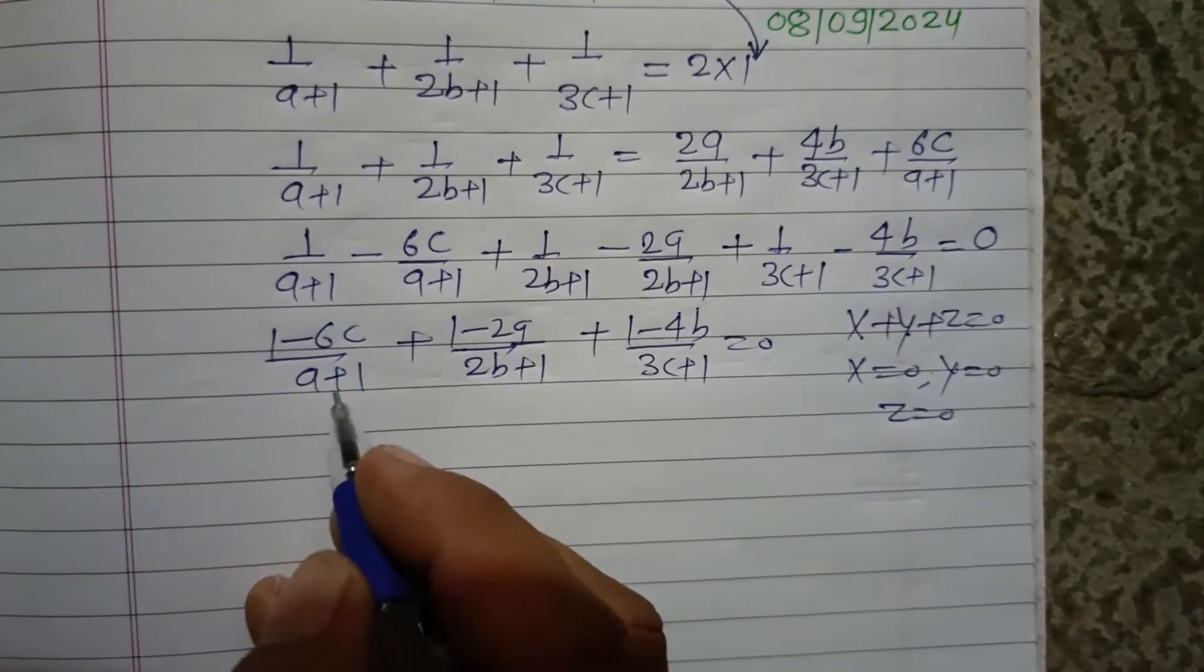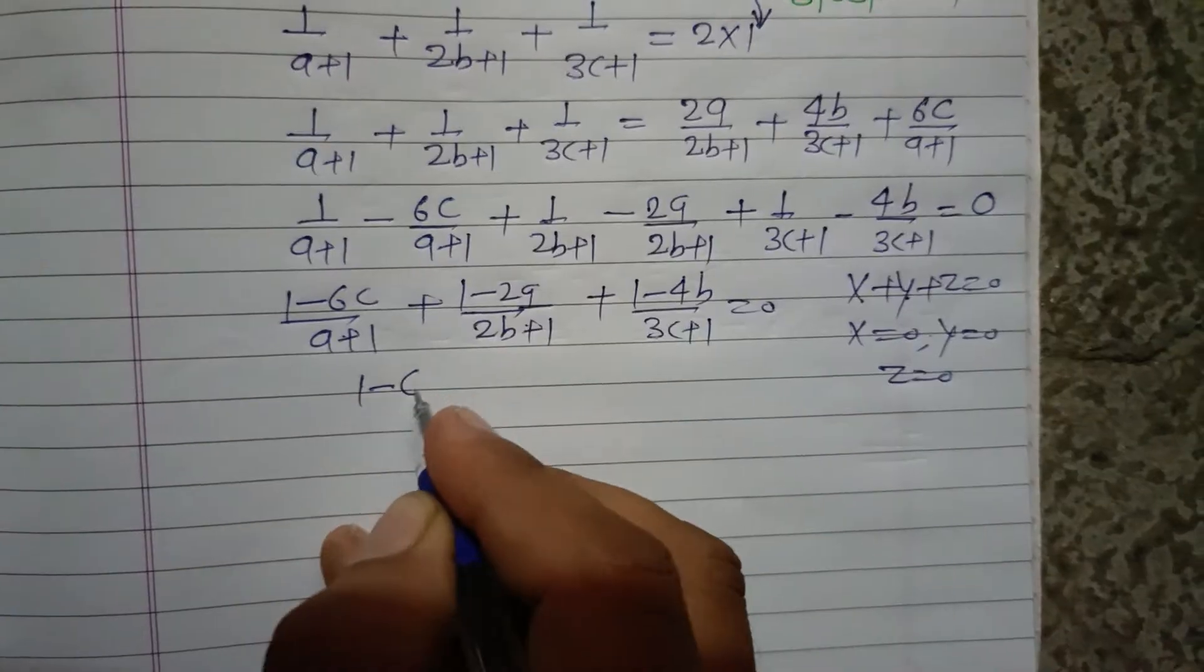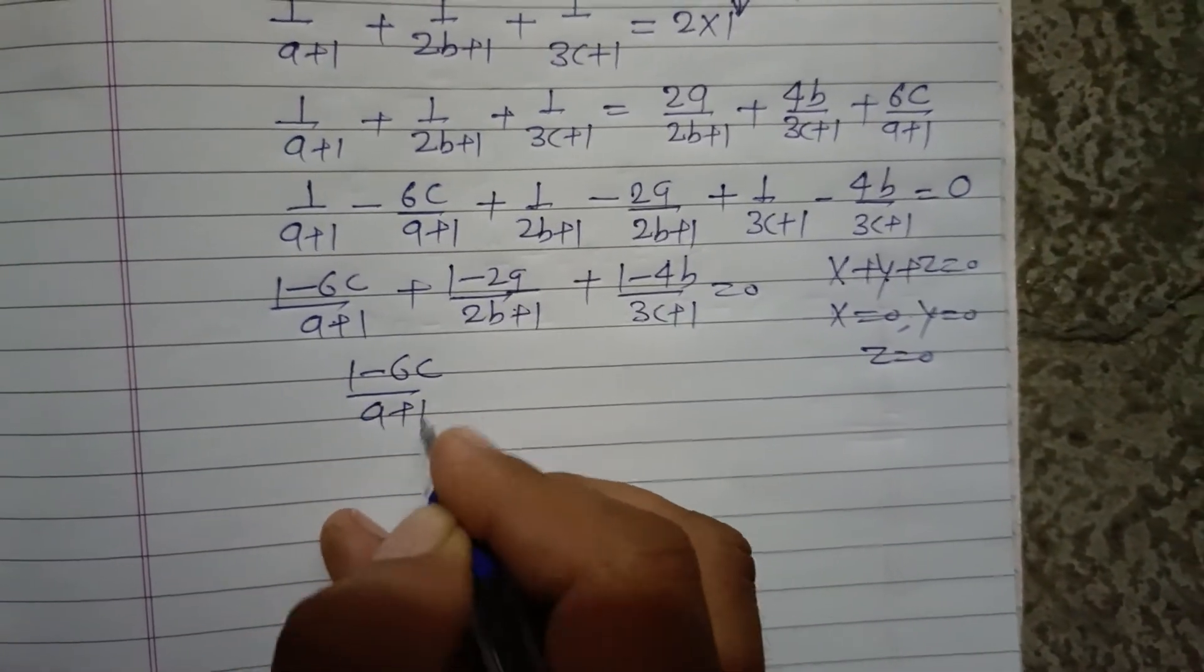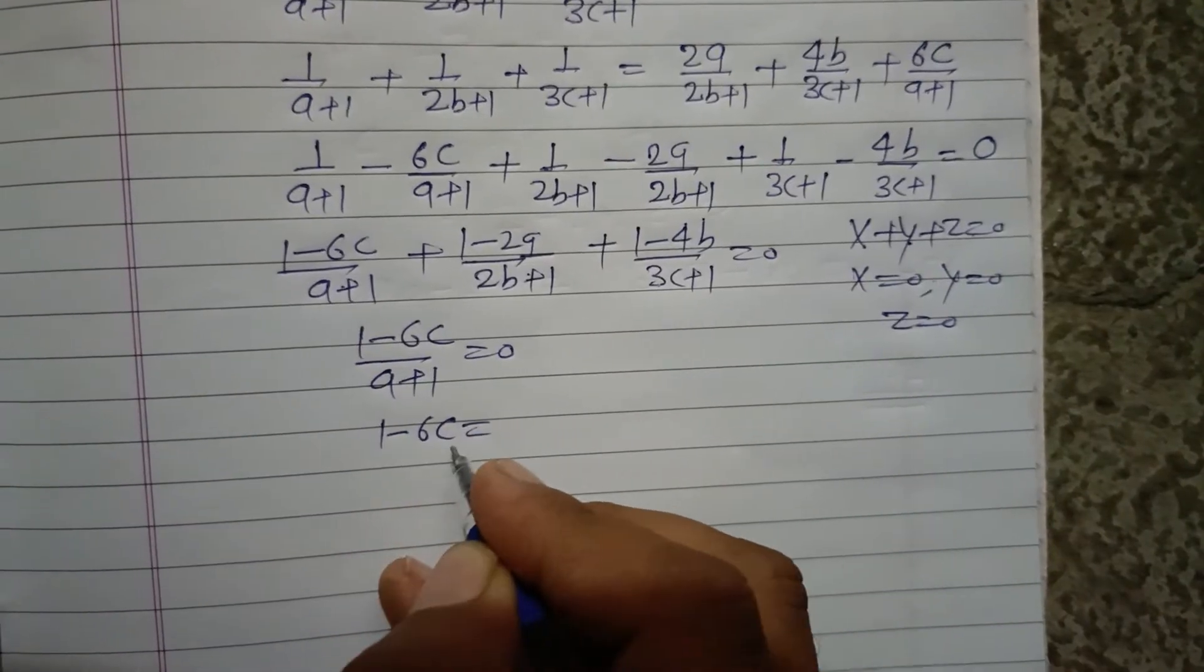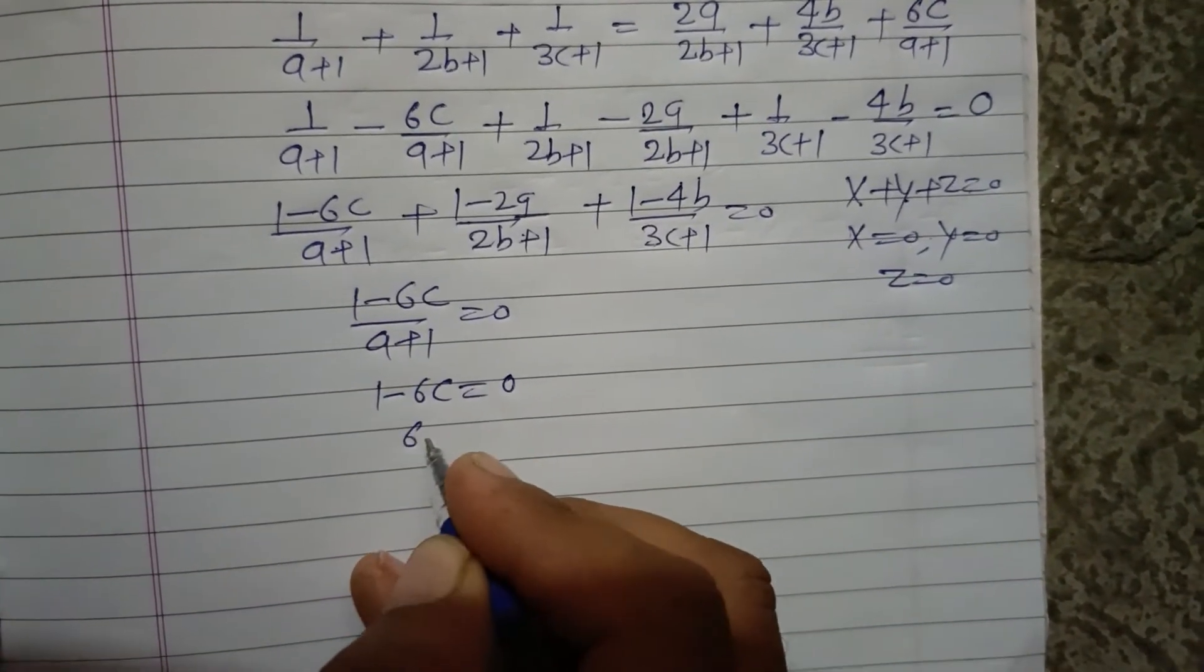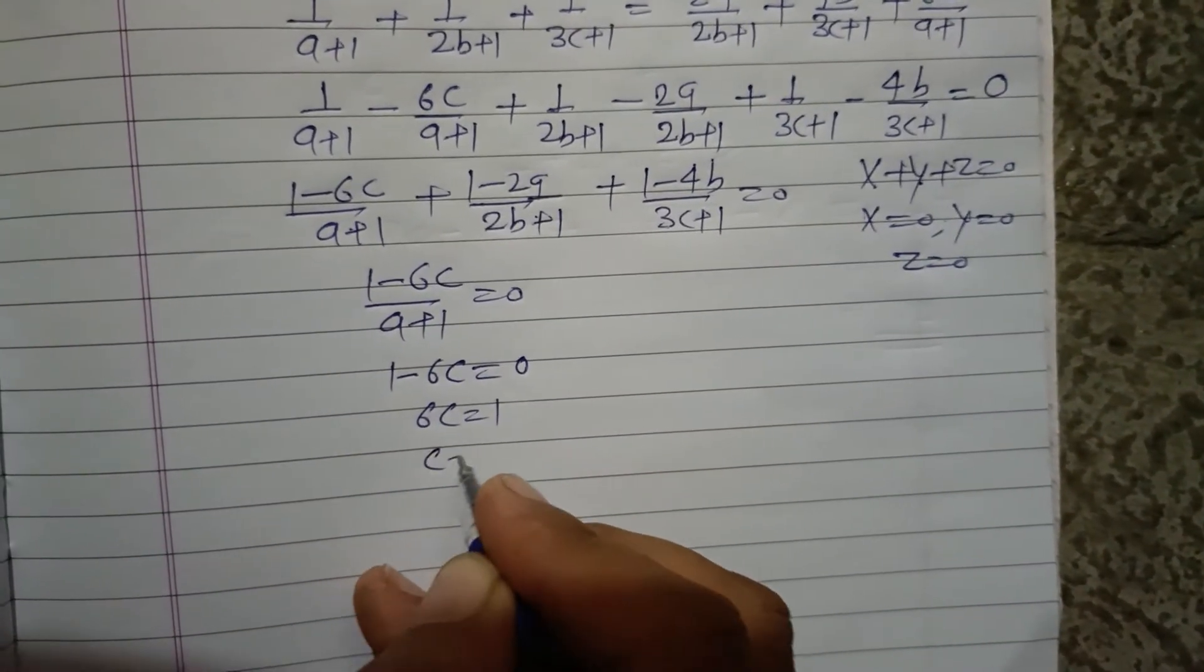So we put these three terms equal to 0. 1 minus 6c over a plus 1 equal to 0. From here we get 1 minus 6c equal to 0, so c equal to 1 by 6.